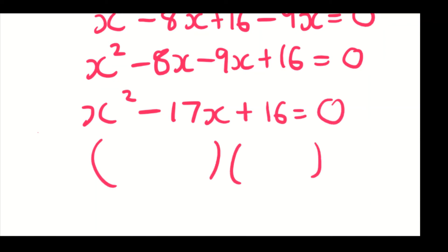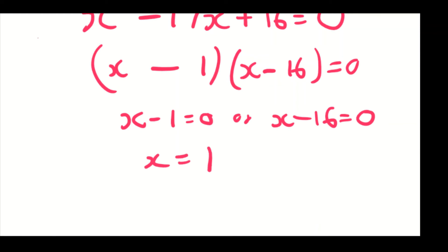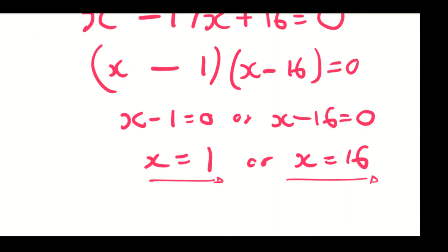Factorizing x squared minus 17x plus 16 equals 0: factors of x squared are x and x, factors of 16 that give the middle term are 16 and 1, both negative. So x minus 1 equals 0 or x minus 16 equals 0, giving x equals 1 or x equals 16. Since this is a surd equation we must check both values. After checking, x equals 1 does not satisfy the original equation, so the only solution is x equals 16.